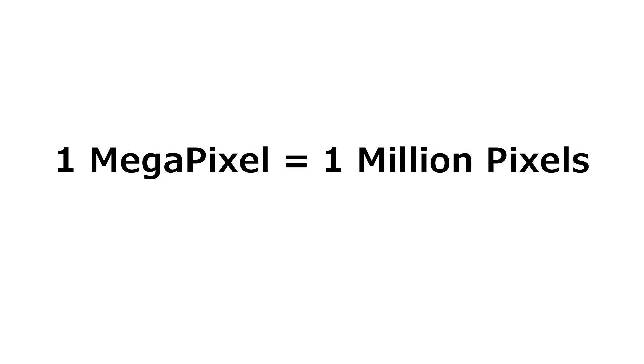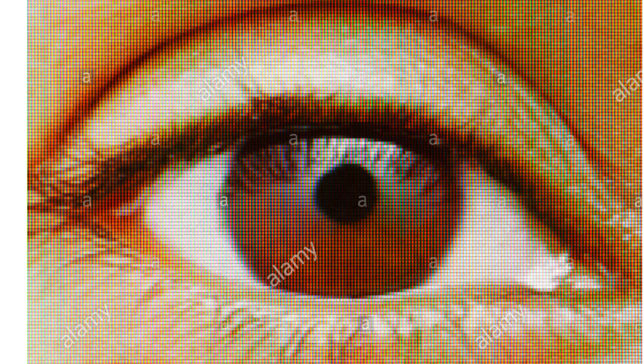So this small box is called a pixel. The camera sensor is made up of crores of pixels. One million pixels equals 1 megapixel. So a 12 megapixel camera has 12 million pixels, a 48 megapixel camera has 48 million pixels, and a 64 megapixel camera has 64 million pixels. Now we have a clear idea of what megapixels are.